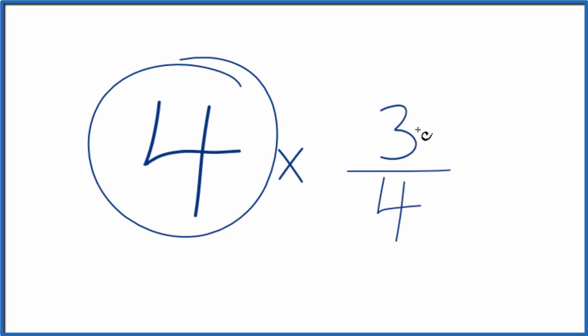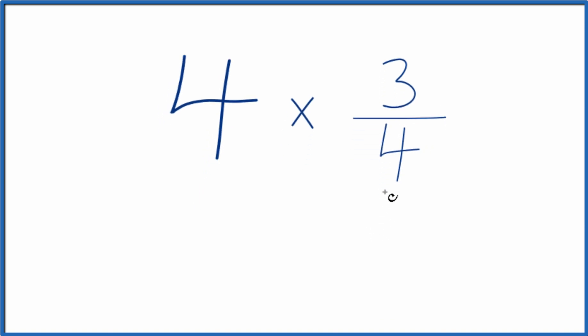Let's multiply 4 times 3 fourths, and here's how you do it. So first off, you could just think of it that you have 4 of these 3 fourths and add 3 fourths together 4 times, like this.